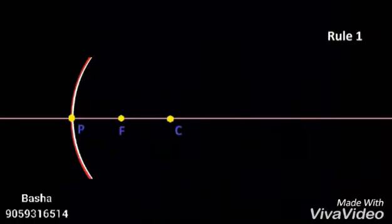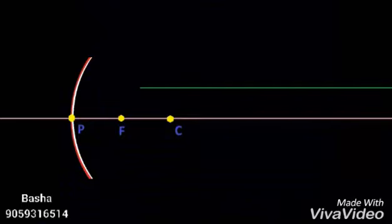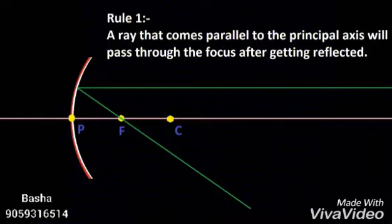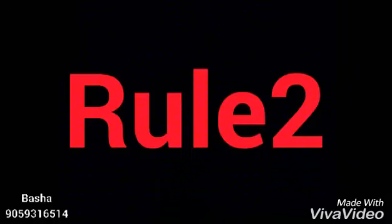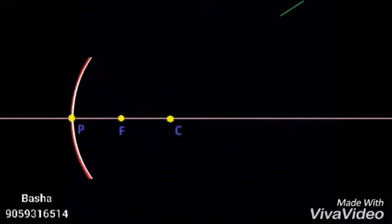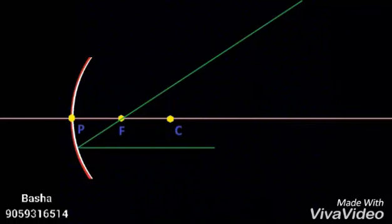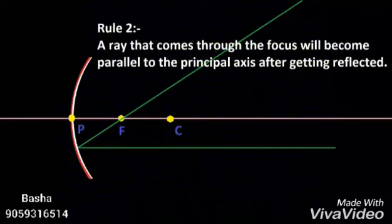Rule 1: A ray that comes parallel to the principal axis, after reflection, passes through the focus. Rule 2: A ray that passes through the focus will become parallel to the principal axis after getting reflected.